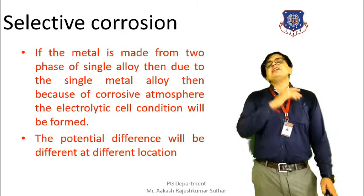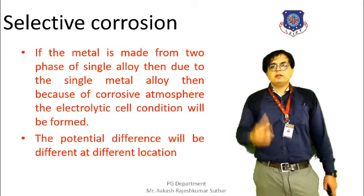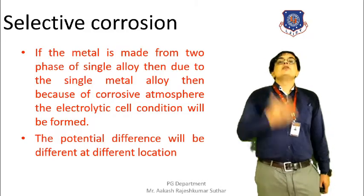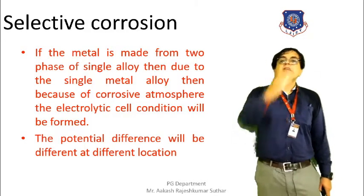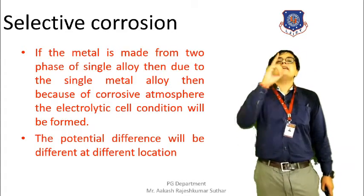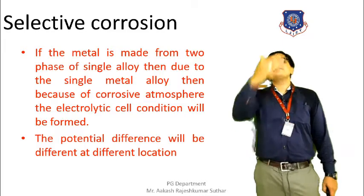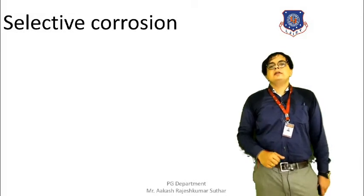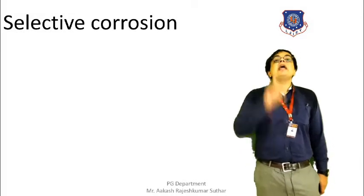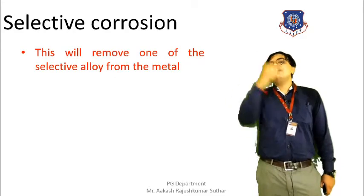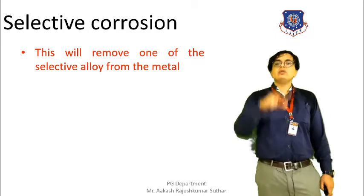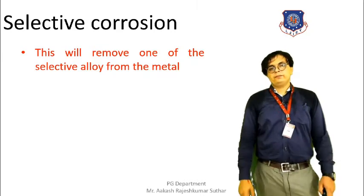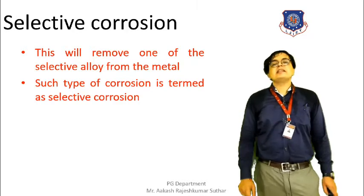The potential difference at different locations within the alloy will be different. Because of this potential difference, a corrosive environment is caused around the metal with two alloys. What happens is that, out of the two alloys in the metal, one selective alloy gets removed. Once this selective alloy is removed from the two-alloy metal, we can say that selective corrosion has occurred. This is how selective corrosion takes place.